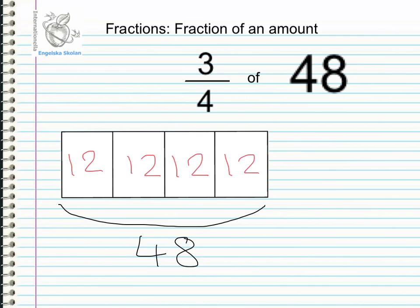And I can see that this is correct because I know that twelve and twelve and twelve and twelve all put together equals forty-eight.